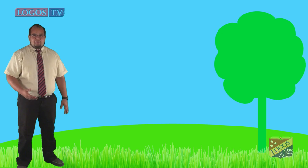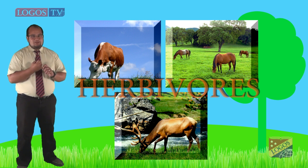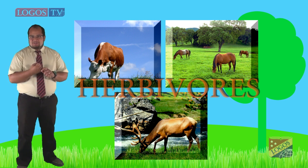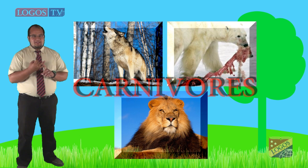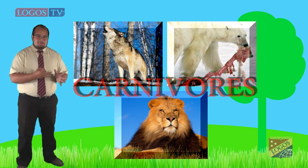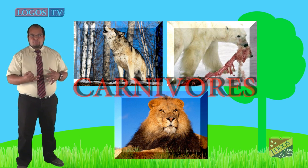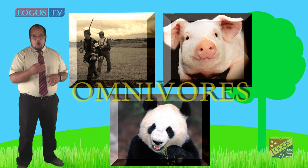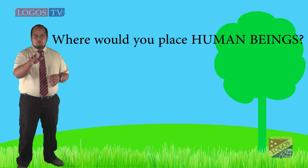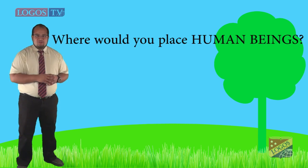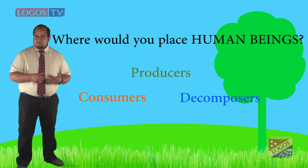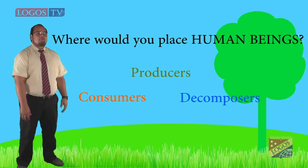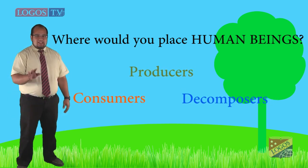When talking about consumers, we should consider that there are different types of consumers. Some are herbivores because they eat only plants. Others are carnivores—they only eat other animals. And there is another group that eats plants and animals. We call them omnivores. Where would you place human beings? Do you think we are producers, consumers, or decomposers? If you were thinking we are consumers, you are right.